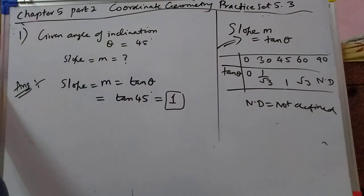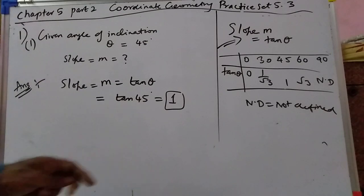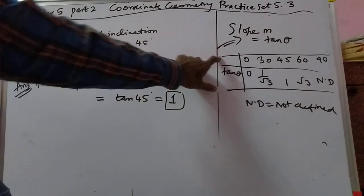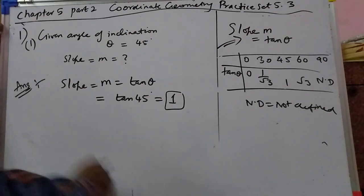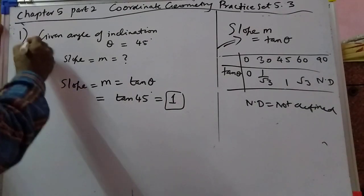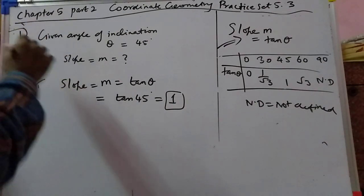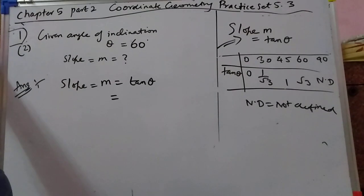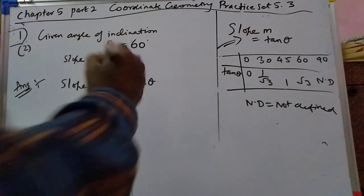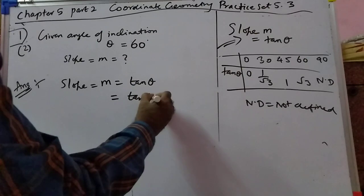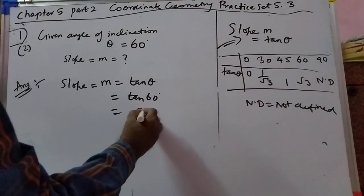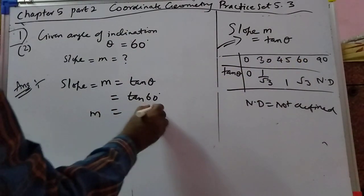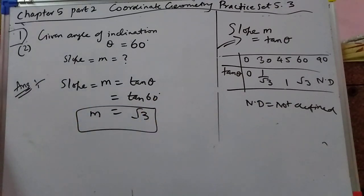Now let's do the second problem. You should know this table — only then you can solve it. Theta is given as 60 degrees. Take tan 60; tan 60 is root 3. Only this much.